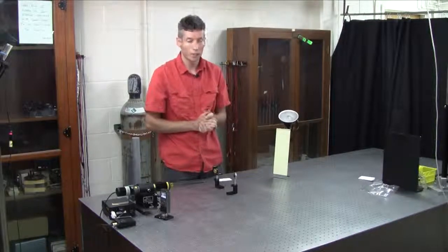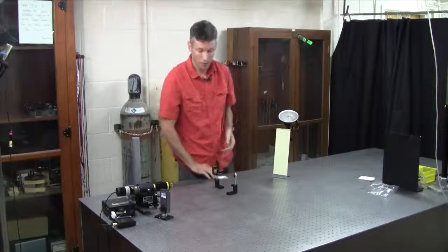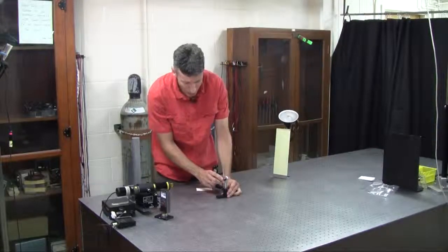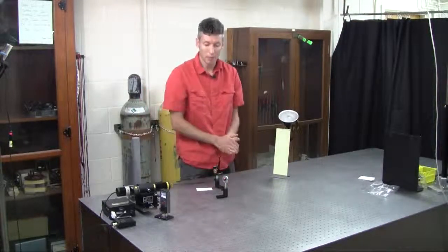So the first step that we want to do is to make sure that the laser is horizontal, and I've set this iris to be at the height that I want my beam to be above the table.